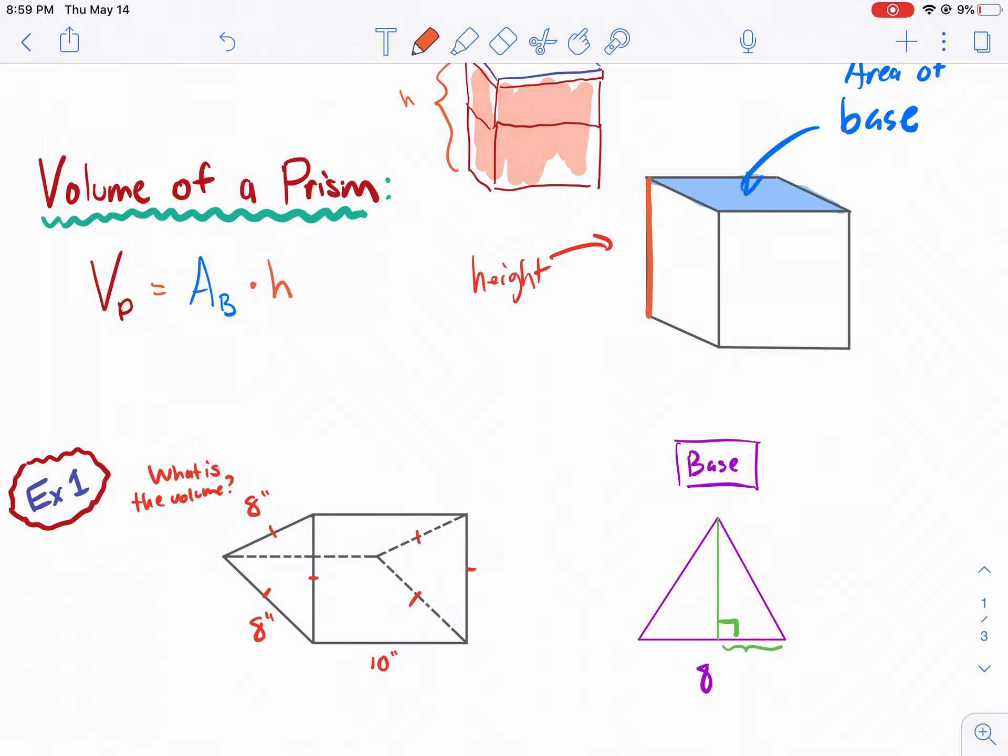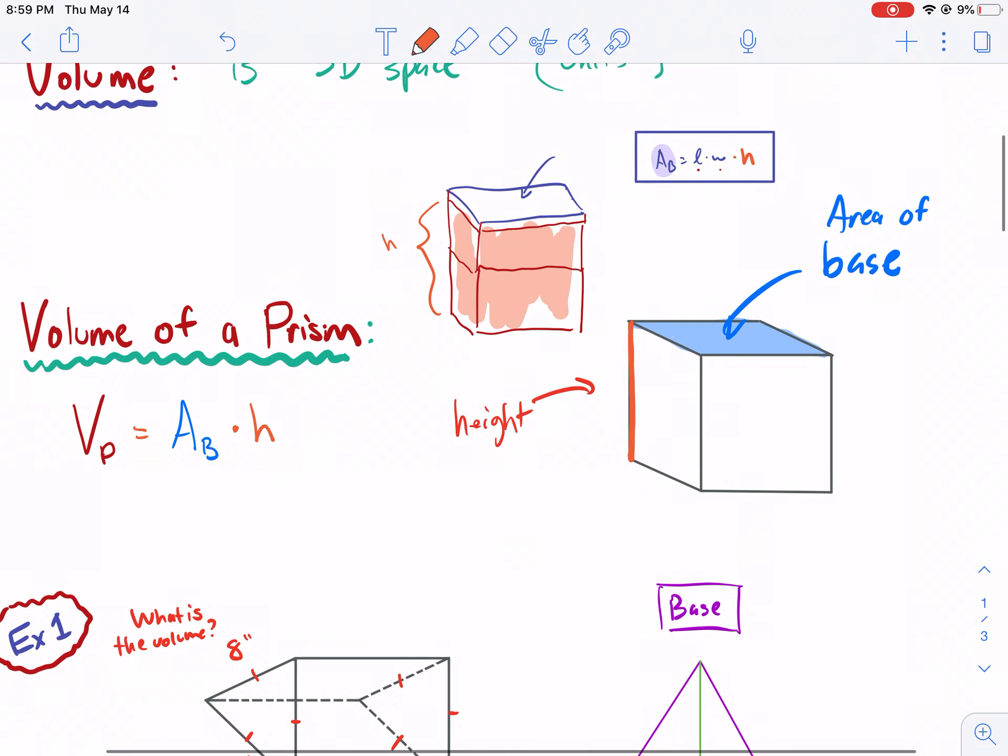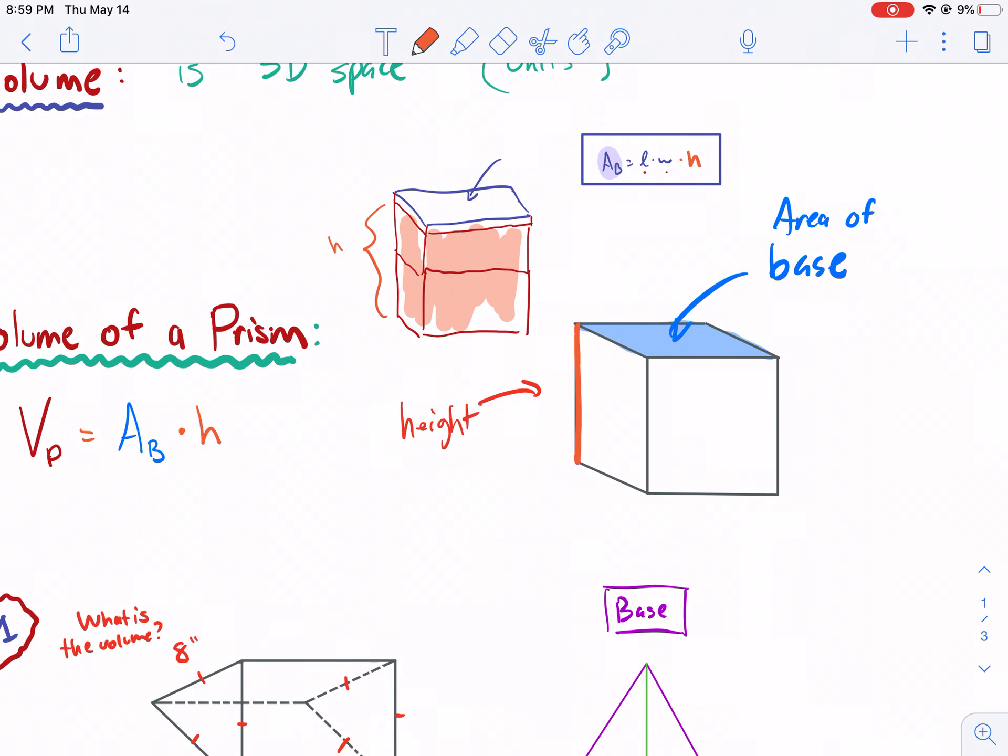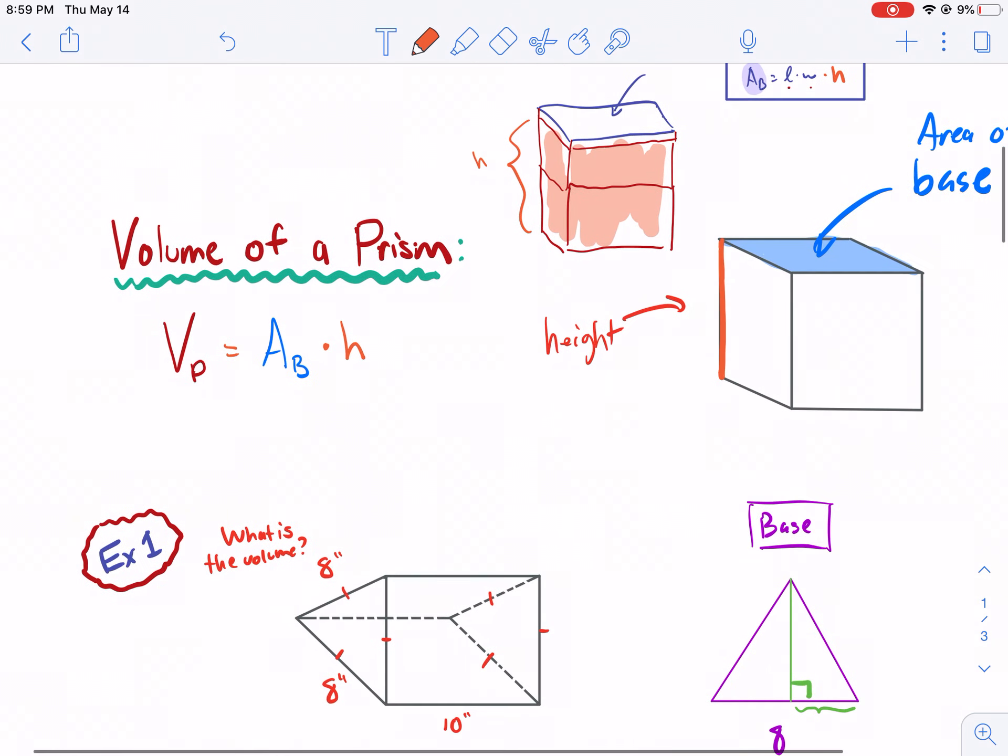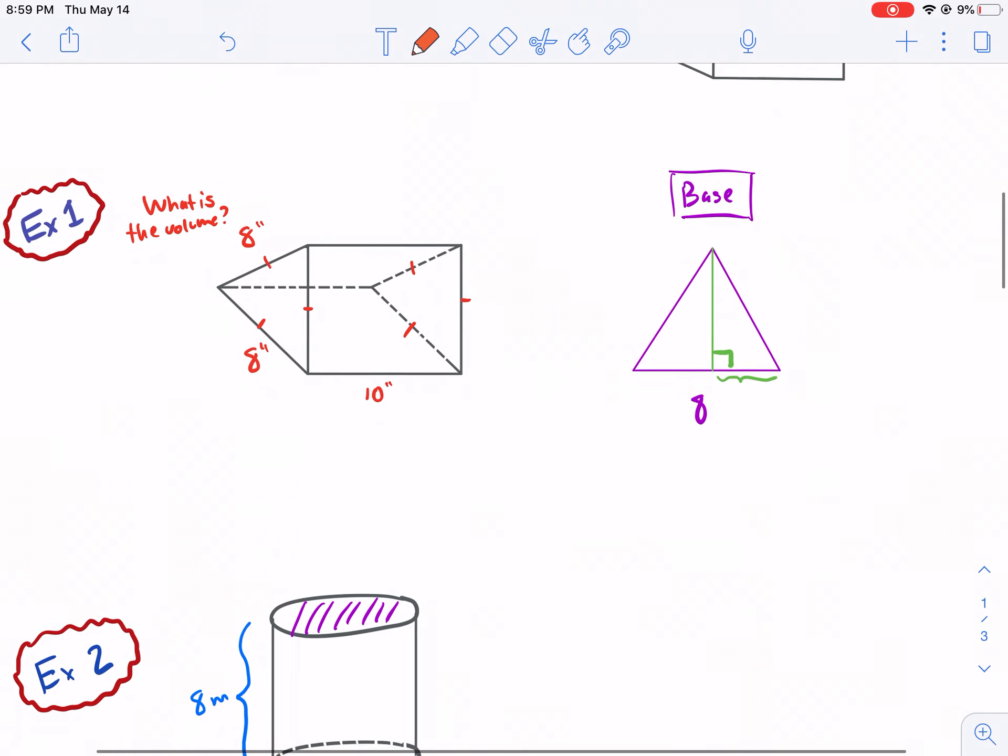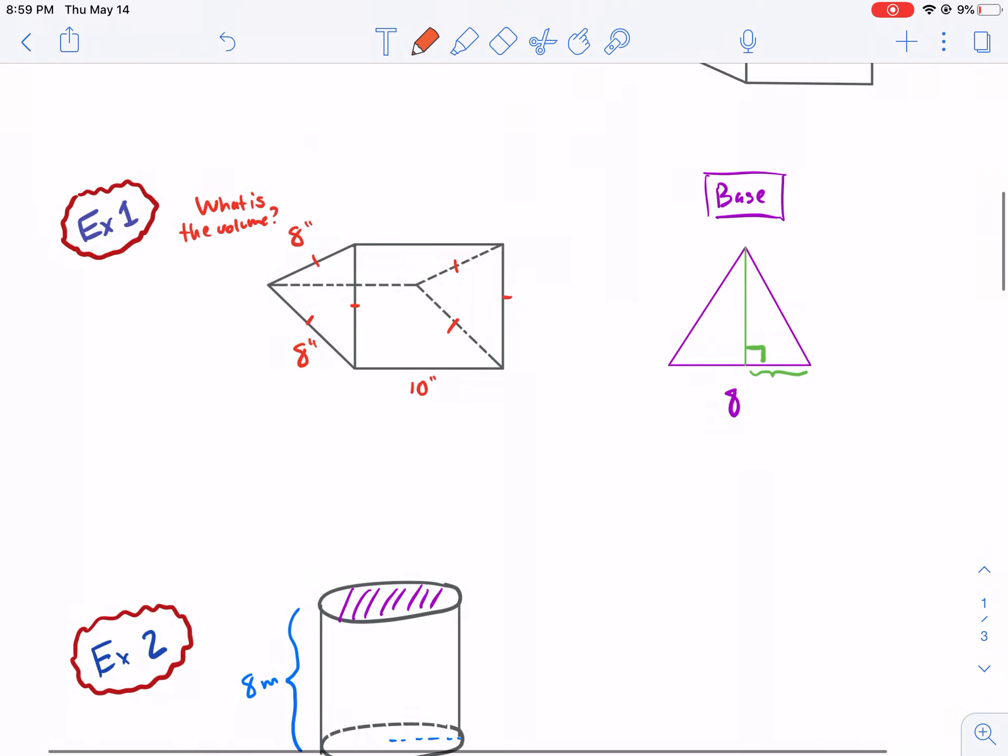The reason why I'm going to kind of brush it over is because it's so simple. You take the area of the base, and then because you're essentially stretching it out over the height, you multiply it by the height, and there you go. You've got the volume. So let's go over a couple examples.